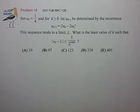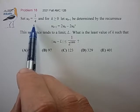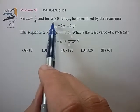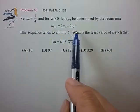This is problem 18 from the 2021 AMC 12b. Set u₀ equal to a quarter and for k greater than or equal to zero, let the next value be determined by the recurrence relationship shown.